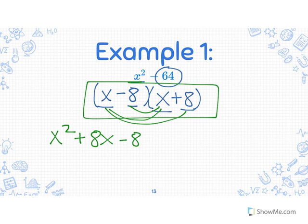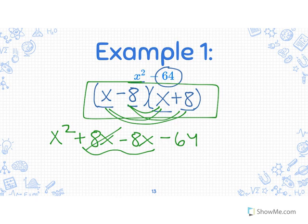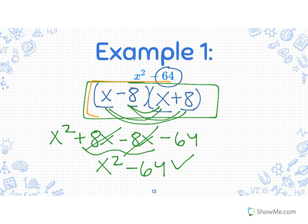Negative 8 times x is negative 8x. Negative 8 times positive 8 is negative 64. Combining like terms, this is why we are missing the middle term — the positive 8x and negative 8x cancel each other out, leaving just x squared minus 64. That gets us back to our original expression — check. Your final solution when you have factored everything is (x minus 8)(x plus 8).